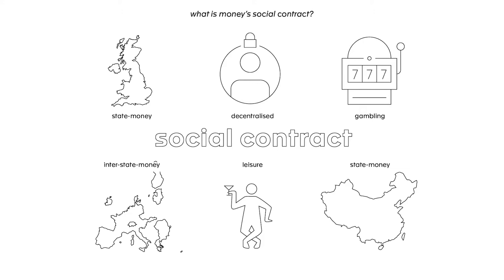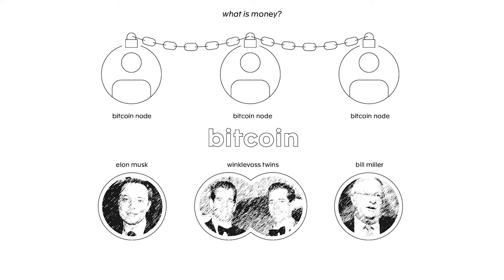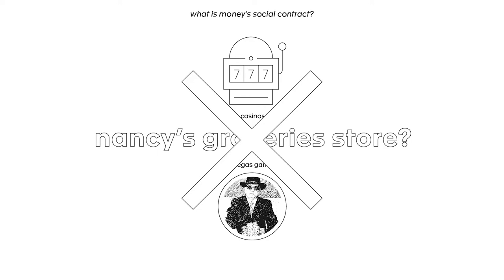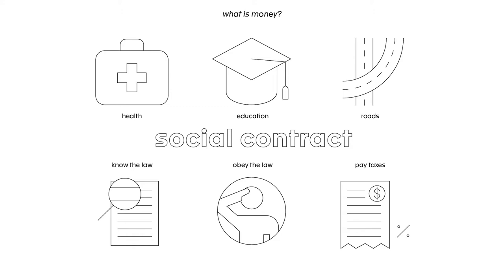For instance, Bitcoin upholds a contract between the Bitcoin owner and the rest of the blockchain — but is it adequate to fund the NHS through taxes? Casino chips uphold a social contract between casinos and Las Vegas gamblers, but are they any good to pay at Nancy's grocery store? Commonly in state money's social contract, governments commit to providing essential public services and infrastructure at the lowest cost possible for the citizen, while citizens commit to obeying state law and paying taxes in state money. Nowadays, money is almost always created and destroyed through fractional reserve banking by supra-monetary institutions, for example banks.